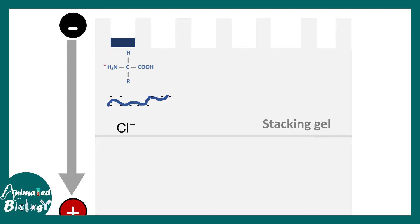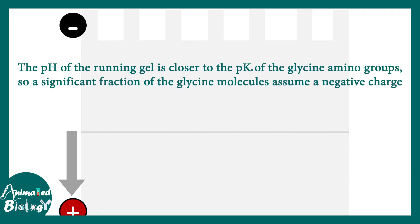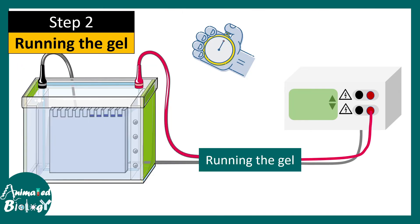Sandwiched between the glycine ion and the chloride ion, the protein molecules move in a stringent manner and all stack up just before the resolving gel — kind of like realigning athletes near the starting line. Now it's time for them to move into the resolving gel. The resolving gel has a different pH: 8.8. At this pH, the chloride ion moves very fast. The glycine ion also starts moving fast because it is no longer protonated — it is now anionic. The proteins then move based on their molecular weight. This is the overall function of the stacking and resolving gel.